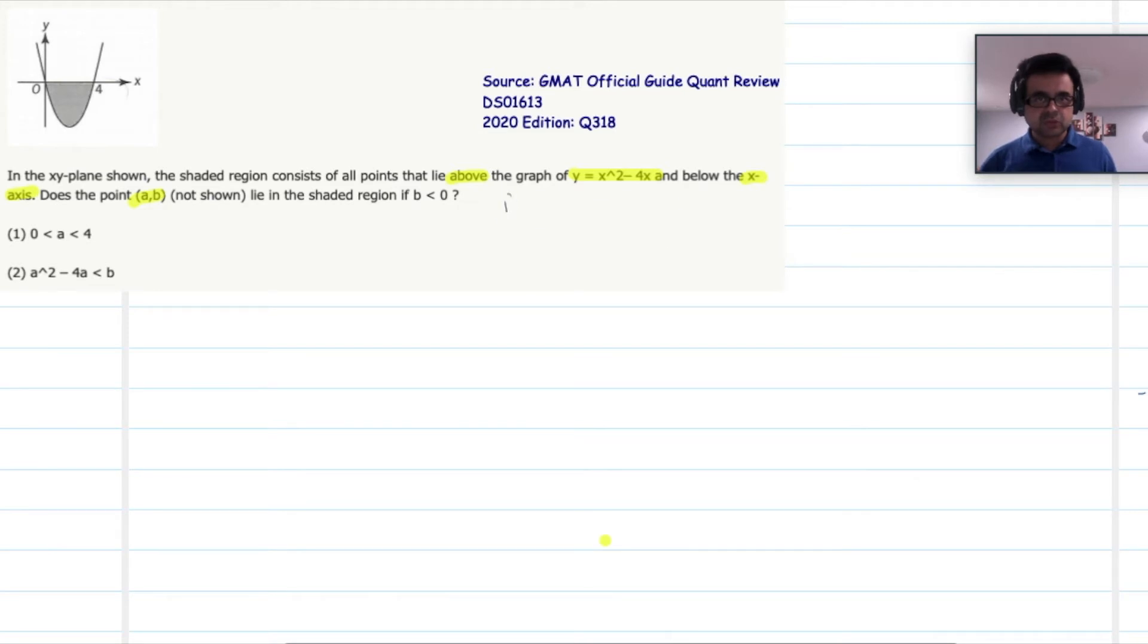So inference number one: if there is a point (x,y) on the curve, that means since it is on the curve, the y point on the curve is equal to x squared minus 4x.